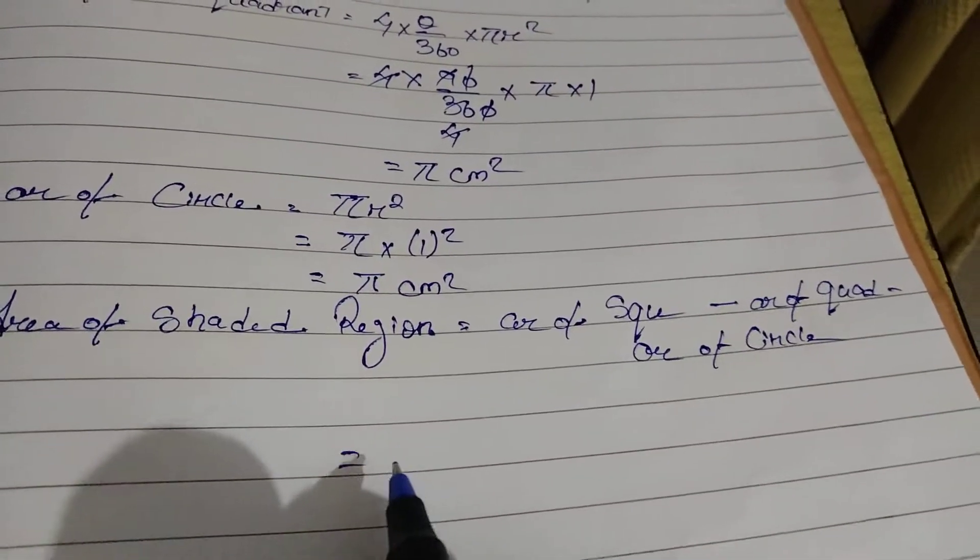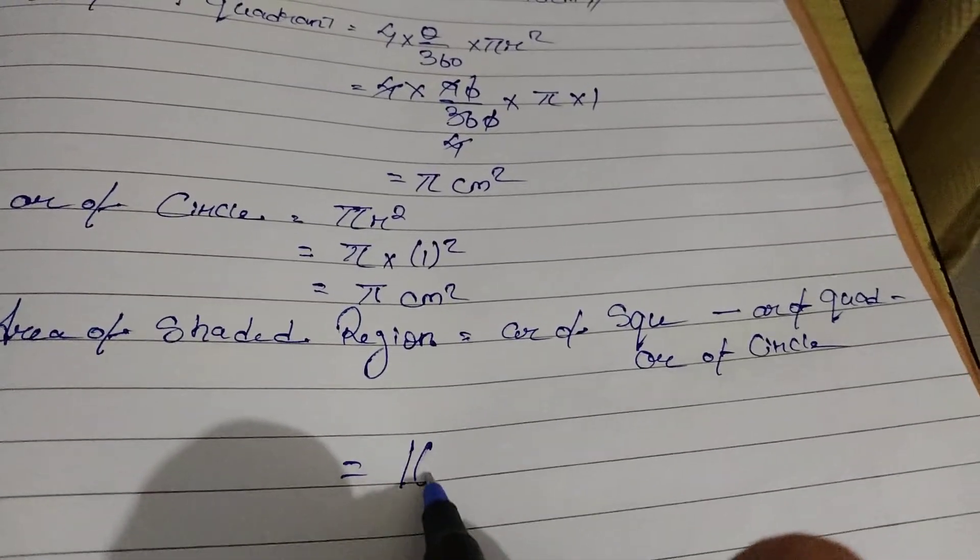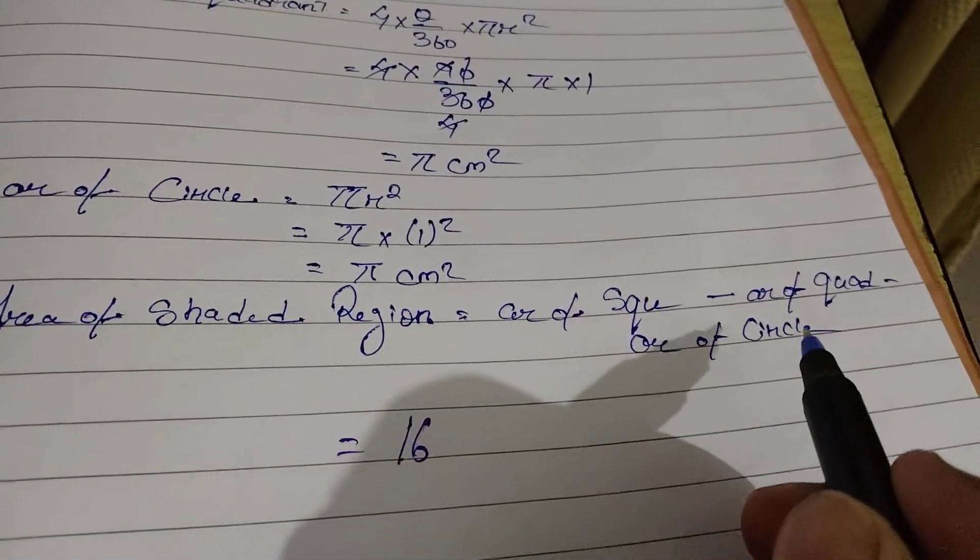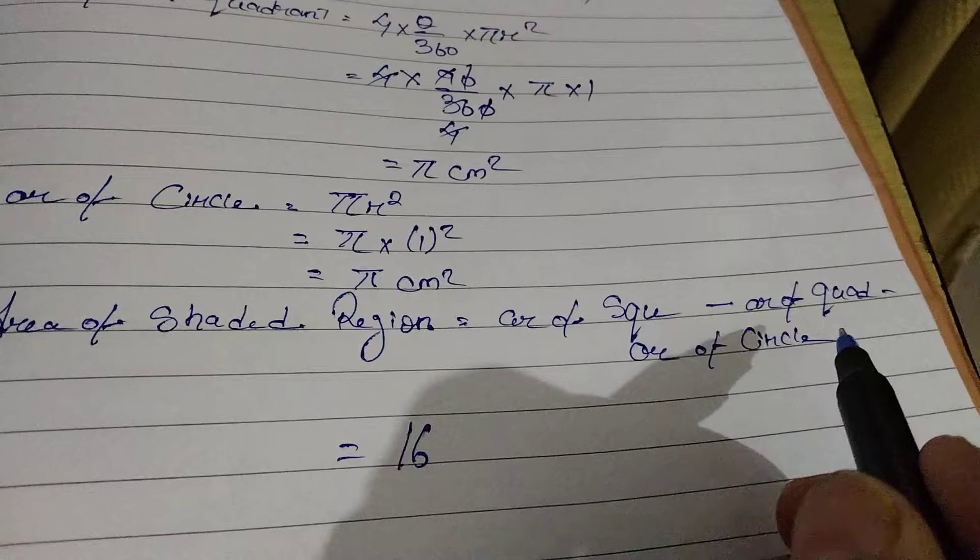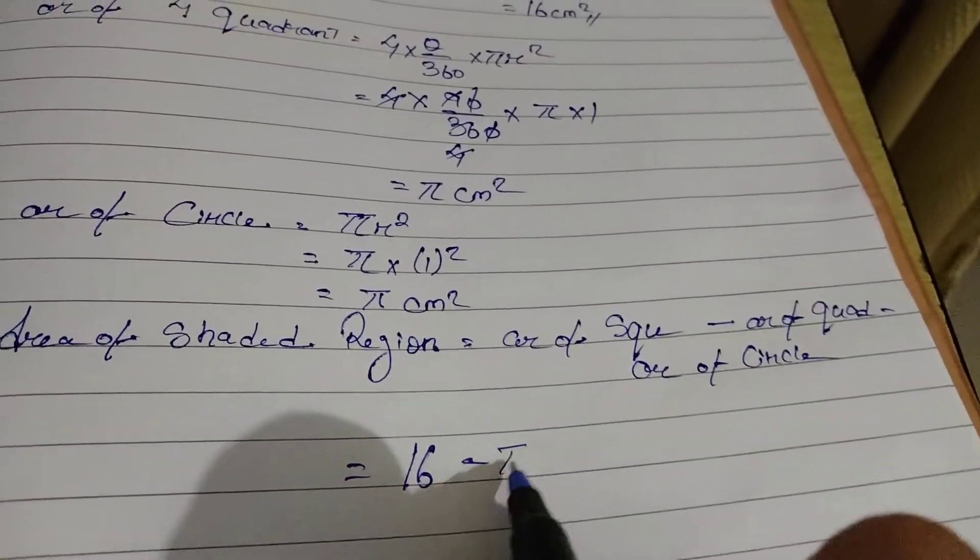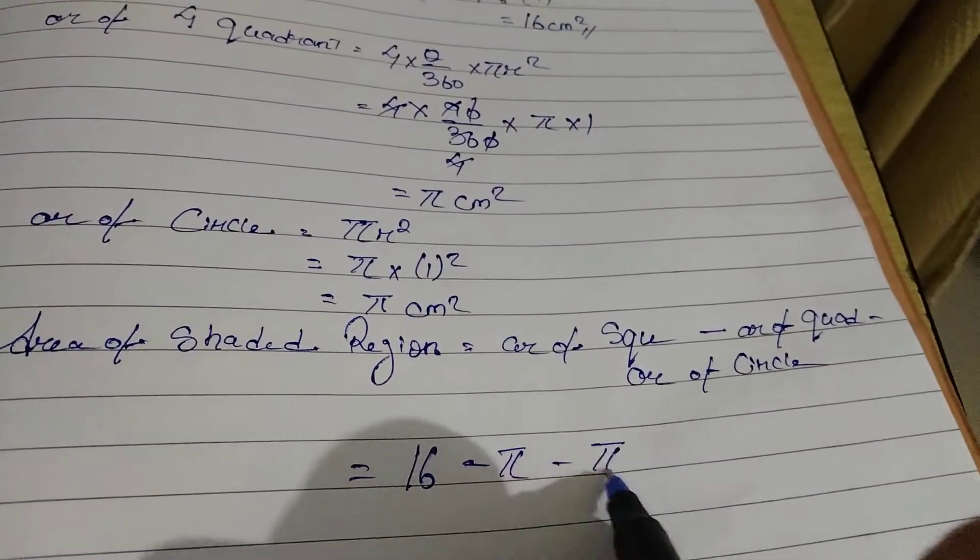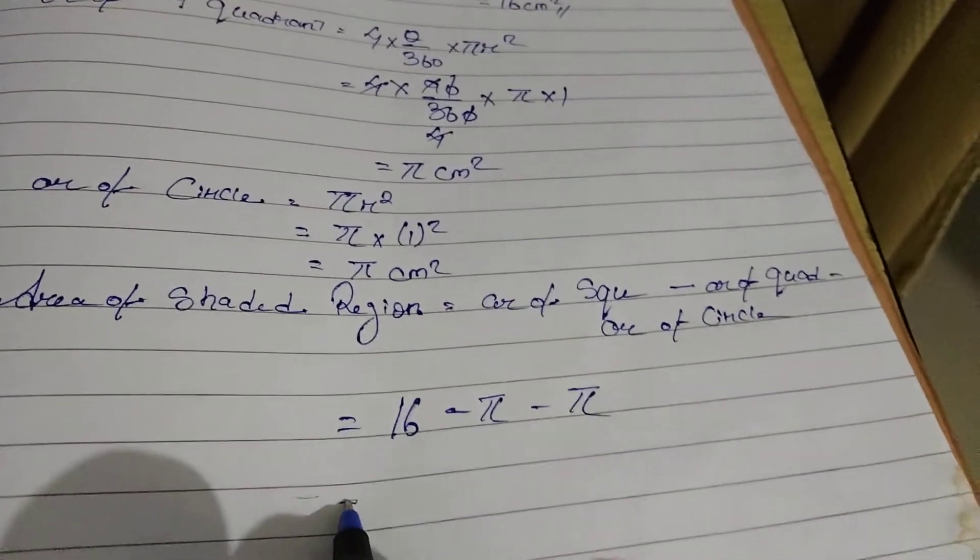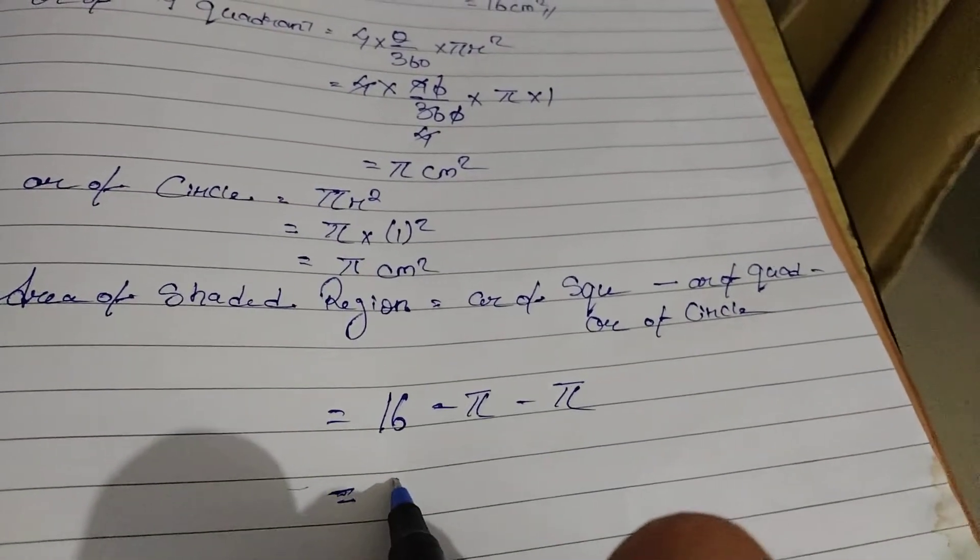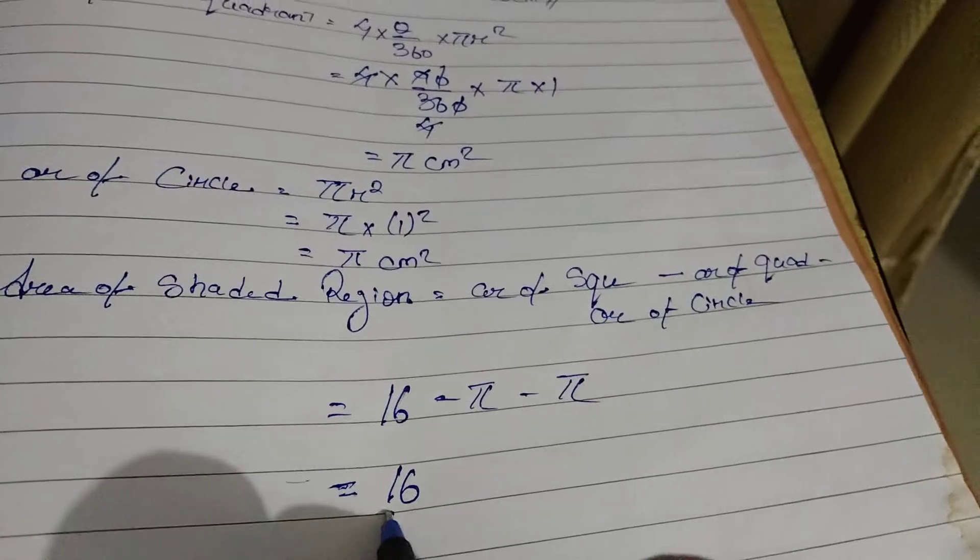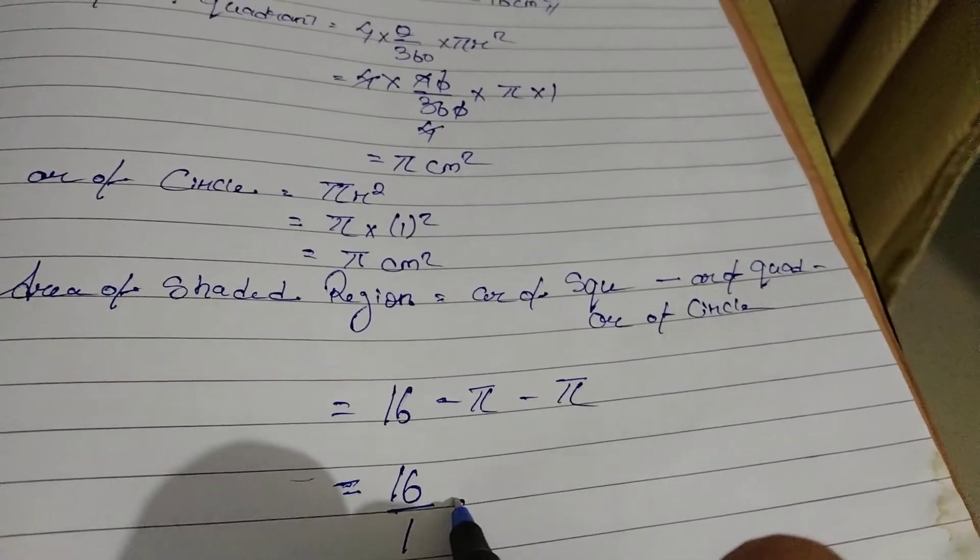Equal to area of square, we got 16, minus area of quadrant, we got pi, minus area of circle, we got pi again. So, I will write 16, no denominator so just 1, minus there are 2 pi.